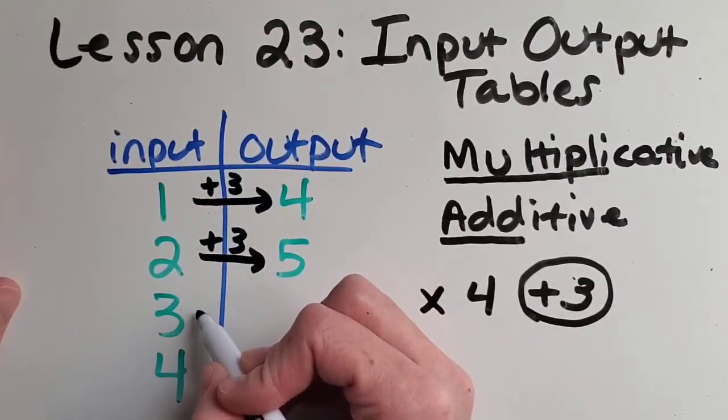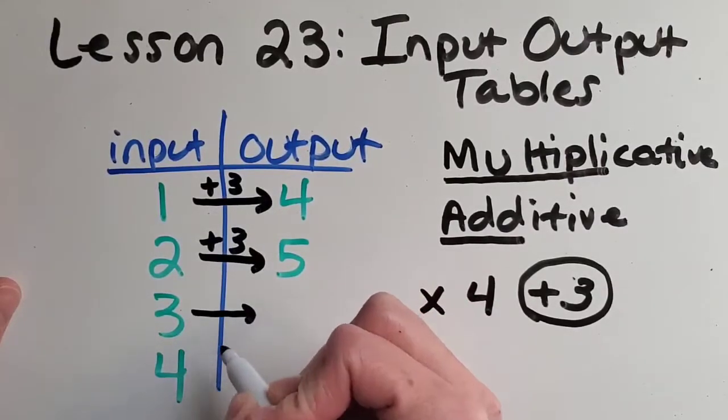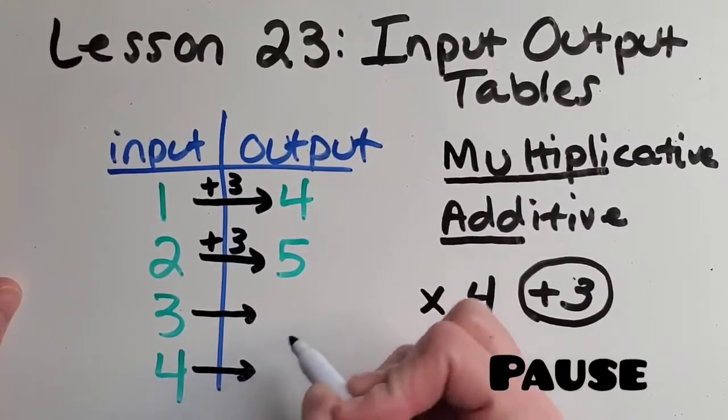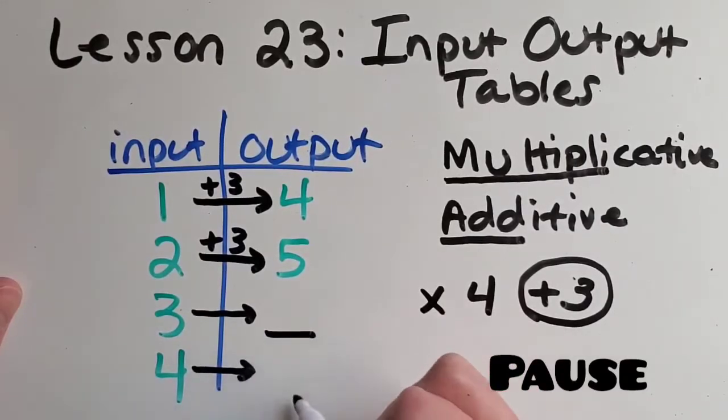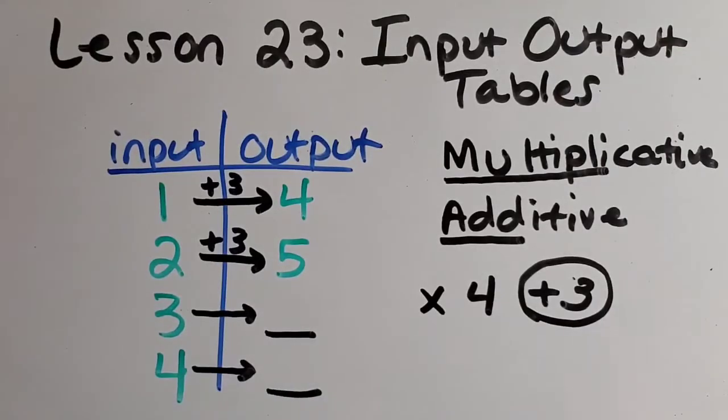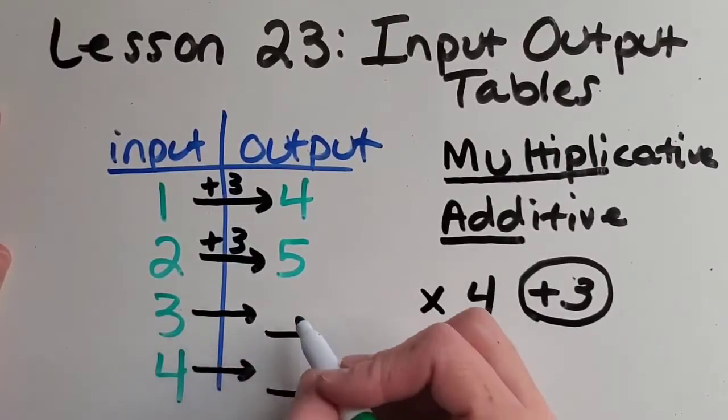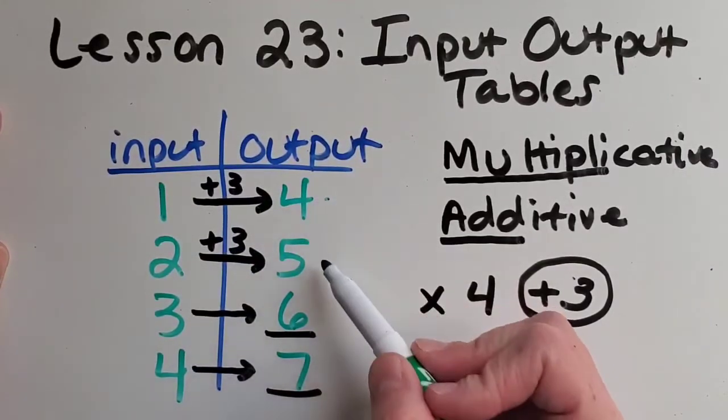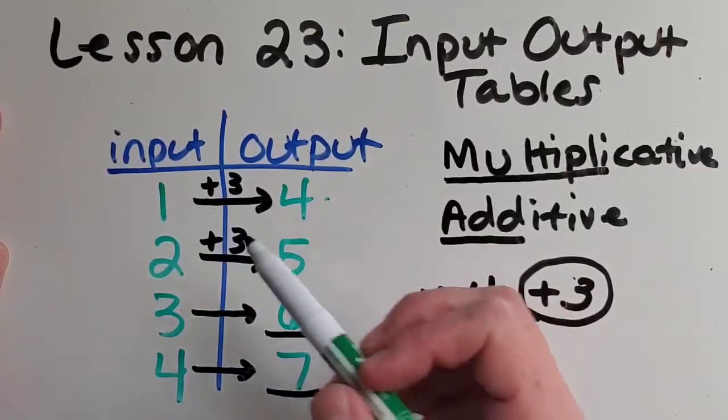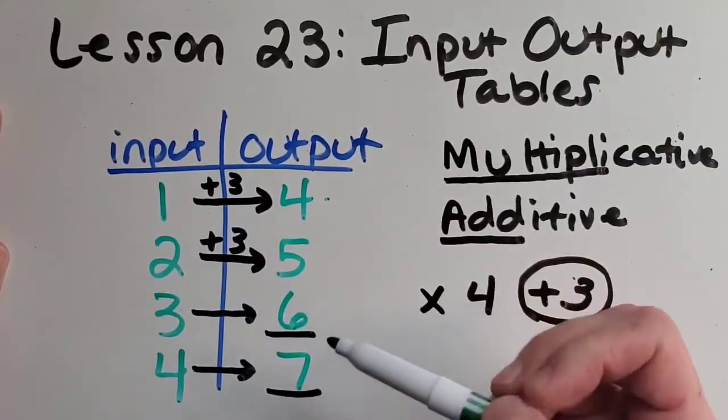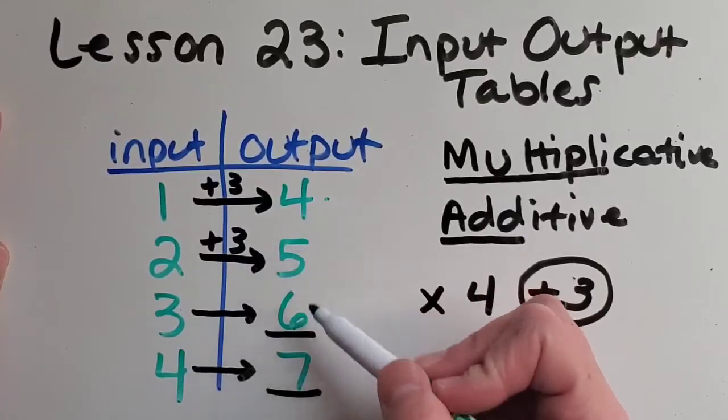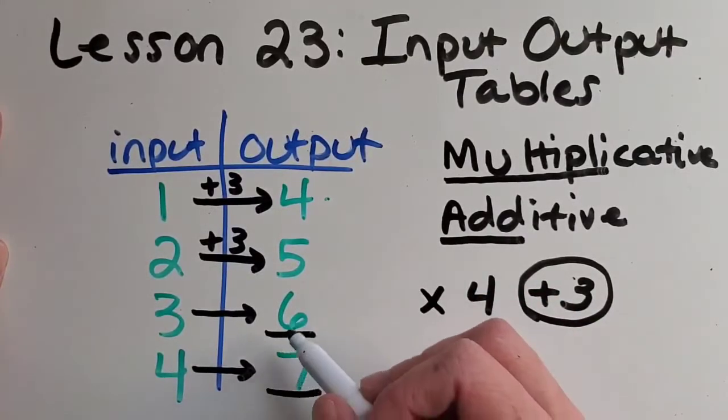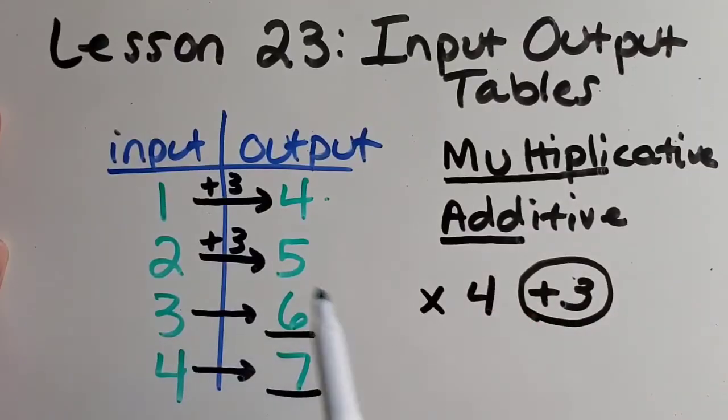Now, let's try doing the rest of the input-output table. Can you pause the video and figure out my next two outputs? Let's check your work. So, three plus three is six. Four plus three is seven. You're also probably noticing that there's patterns going down these input-output sides as well. Four, five, six, seven. So it's kind of a nice little pattern there of plus one. Same on the input side.